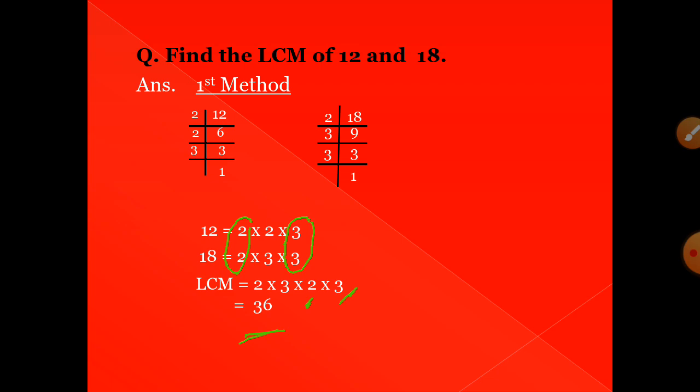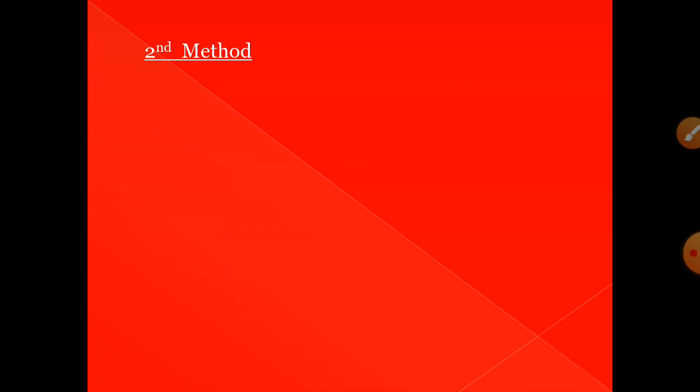This is the first method to find the LCM, and it is mostly used when you have to find both LCM and HCF in one question. If a question requires finding both LCM and HCF, we use this method. Now see the second method.